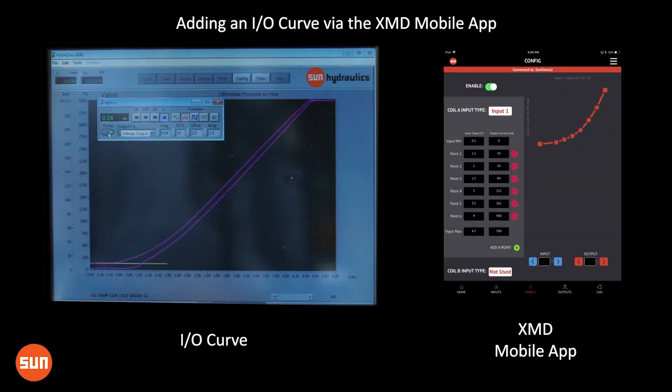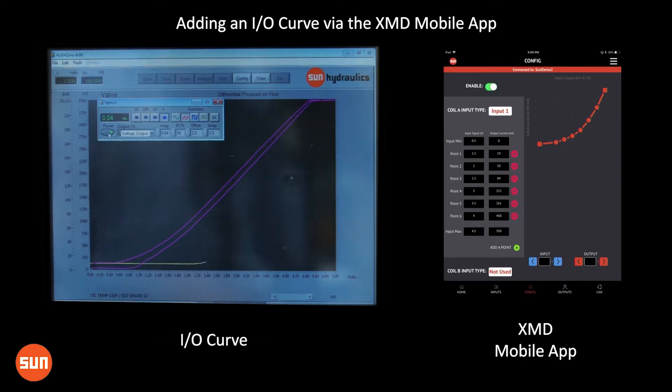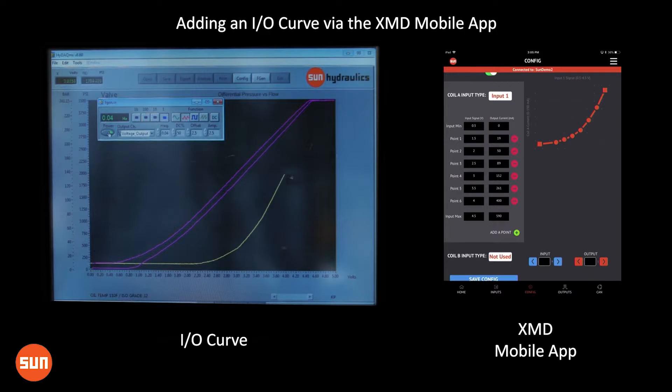When it goes to the configuration page after loading these configurations, you'll see the input values and your output values on this table. Any one of these additional points can be deleted or a new point can be added.